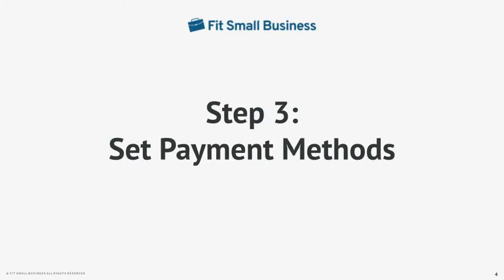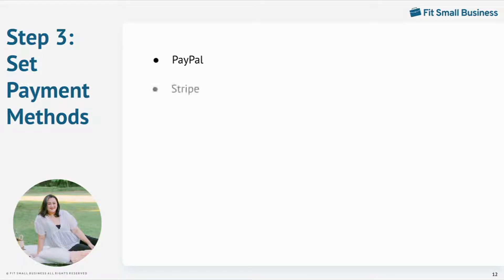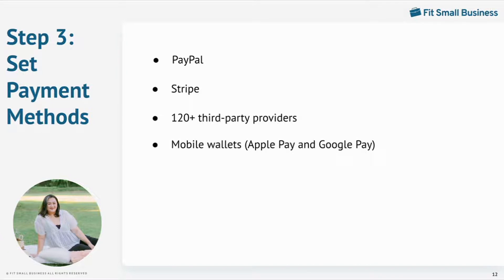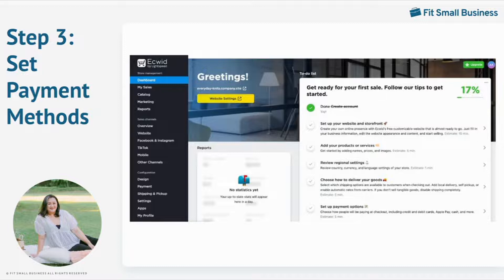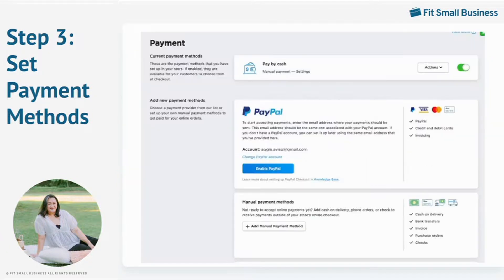After setting up your products and categories, the next step is setting up payment methods for your store. Ecwid supports a variety of payment solutions that enable you to accept credit cards and offer alternative payment options depending on where your store is operating. For example, you can process payments through PayPal, Stripe, 120-plus third-party payment systems, and even mobile wallets such as Apple Pay and Google Pay. Manual payment methods are also offered such as cash on delivery, bank transfers, invoices, purchase orders, and checks. To set how you want to get paid, go to your control panel, navigate to Configuration, and click on Payment. Then just choose your preferred option and follow the instructions.